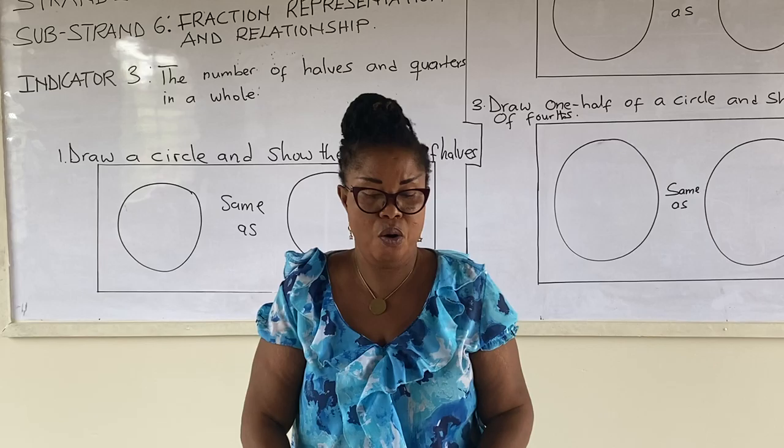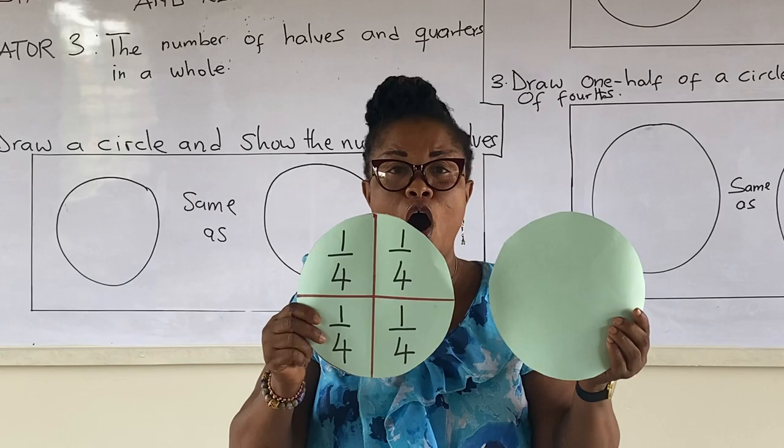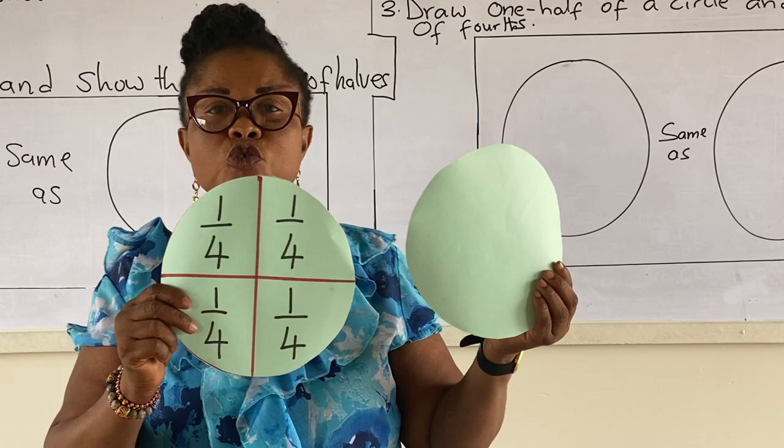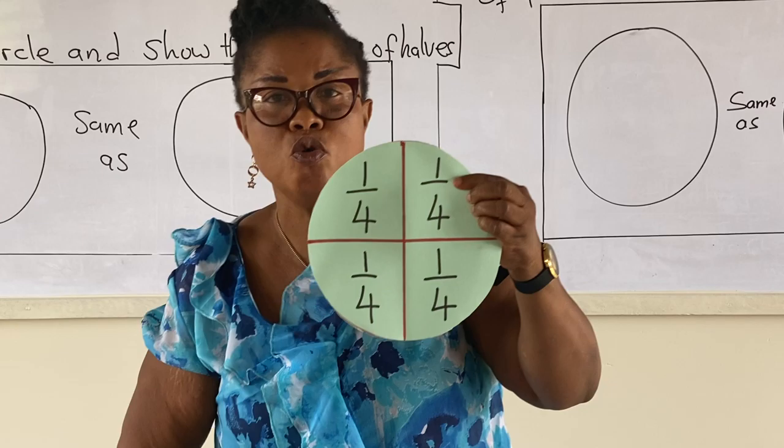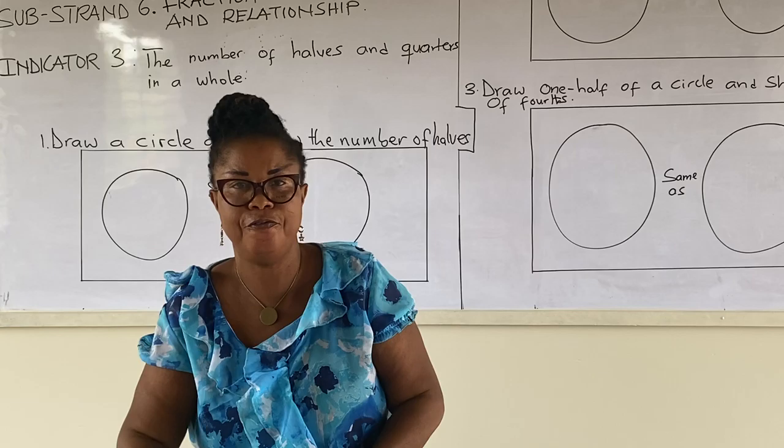Now, when a whole is equally divided into four, we have four equal parts, and one part is known as a quarter. Four quarters equals to one whole.